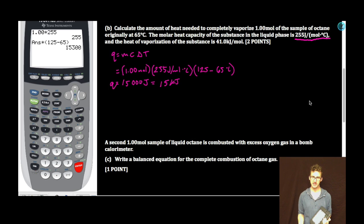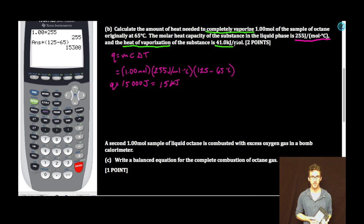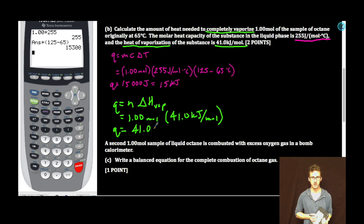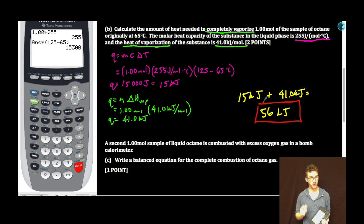Alright, I'm feeling pretty great about myself but in order to completely vaporize it we're not done. All we've done is got it to its boiling point. It hasn't completely vaporized. We need to get to here. That's where the heat of vaporization comes in, 41.0 kilojoules per mole. So Q is equal to number of moles times heat of vaporization. 1.00 times 41.0 kilojoules per mole. Don't even need a calculator. Q equals 41.0 kilojoules. So total amount of heat required: 15 kilojoules plus 41.0 kilojoules equals 56 kilojoules. Don't forget to watch your sig figs on this one. Don't forget to watch your units.